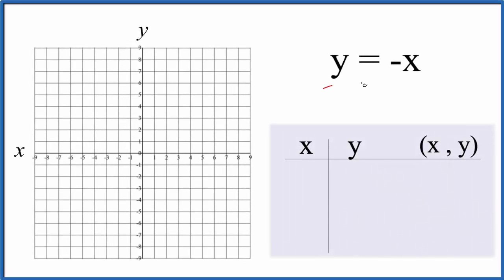Let's graph the linear equation y equals negative x, and we'll do it two ways. First, we'll put some values in for x, find the corresponding values for y, and then graph those points to get our linear equation. Next, we'll check our work with the slope-intercept formula y equals mx plus b.